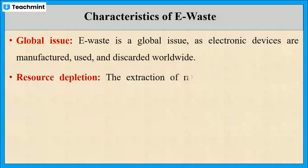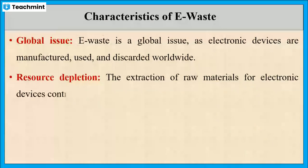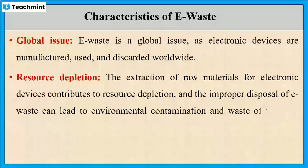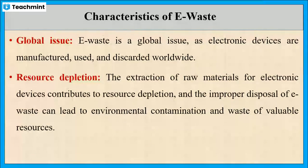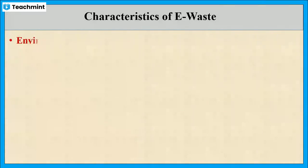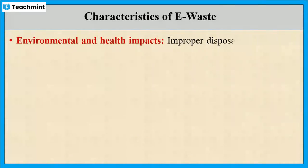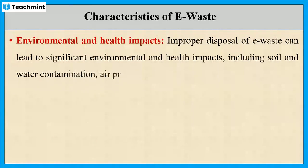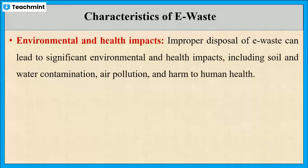The next characteristic is resource depletion. E-waste contains valuable resources like gold, silver, and copper, which can be recovered and reused. However, improper disposal leads to the loss of these resources, contributing to the further depletion of natural resources. Finally, improper disposal of e-waste produces water pollution, air pollution, and soil pollution, which also negatively affects human health.